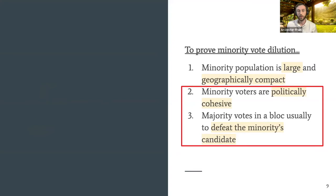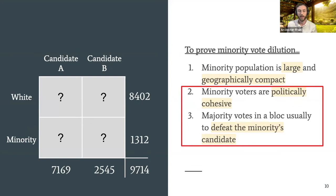Points two and three of the Gingles test are hard to prove because US elections are confidential — we can never really know who voted for which candidate. Take a look at this table: it tabulates all votes cast in a particular precinct in East Ramapo. Just under 10,000 votes were cast, with just over 7,000 going to candidate A and around 2,500 to candidate B. We also know 8,400 voters were white and the rest were minorities, but we don't know how to fill in the inside of this table. Did almost all white voters vote for candidate A or were they split?